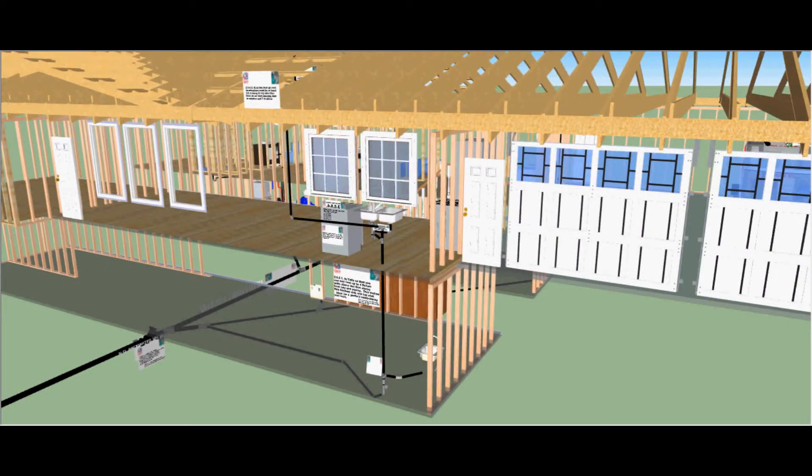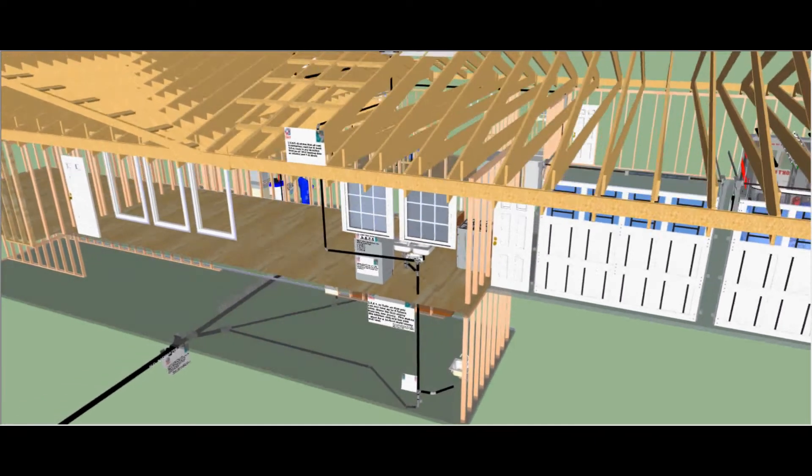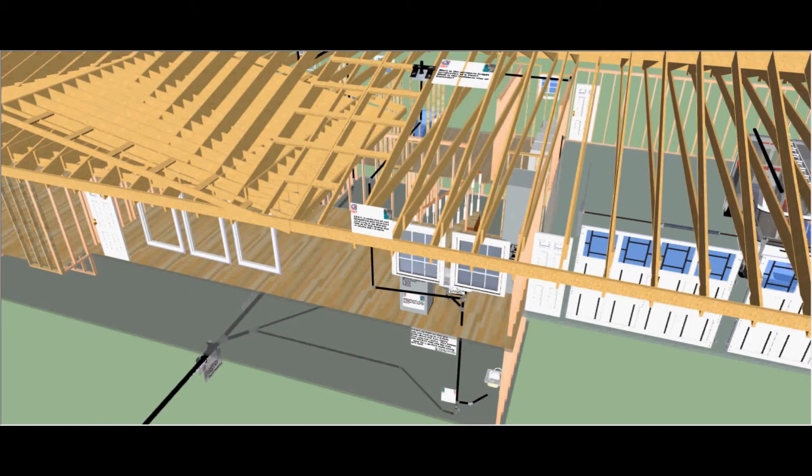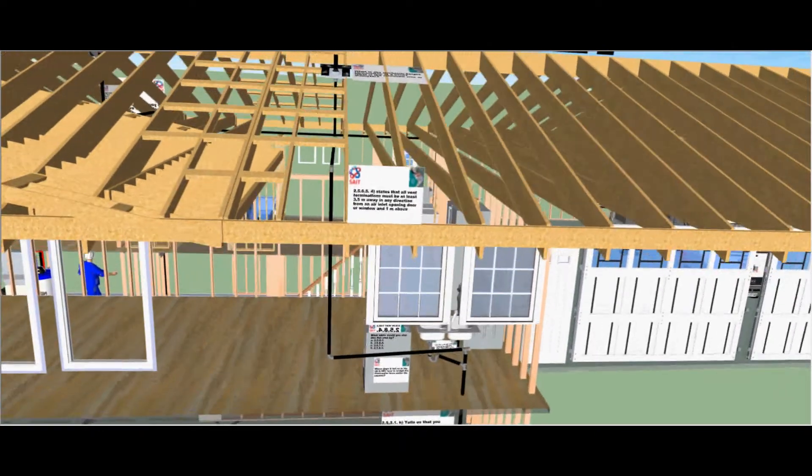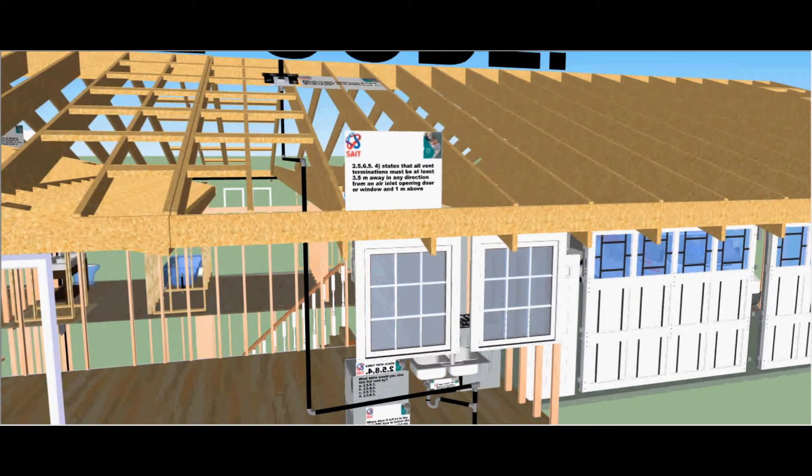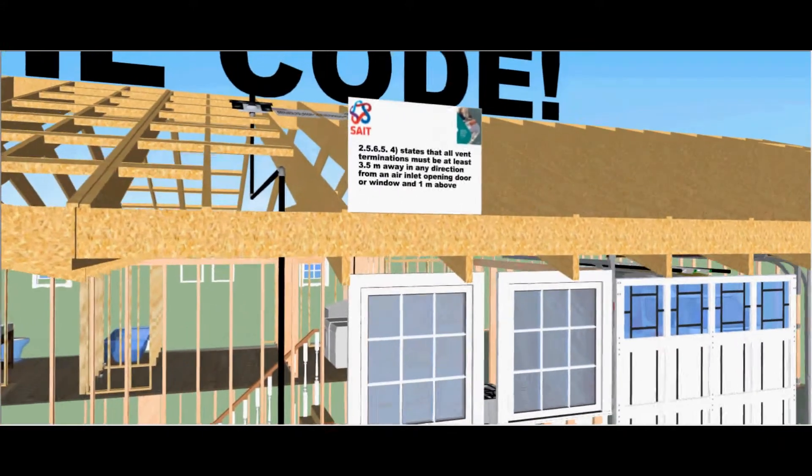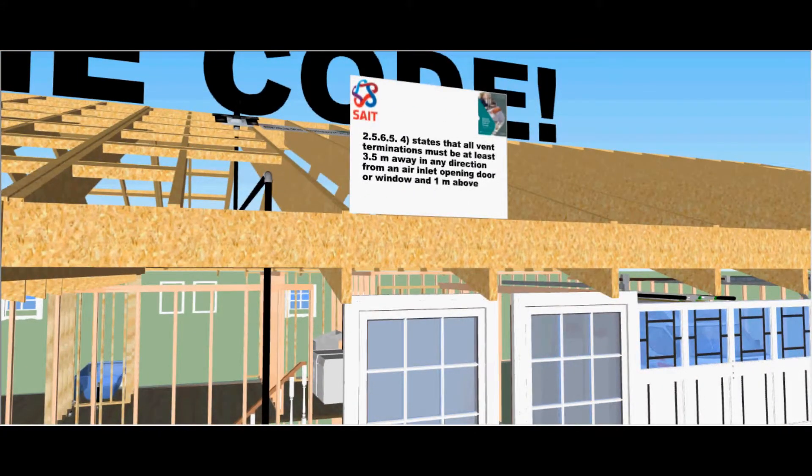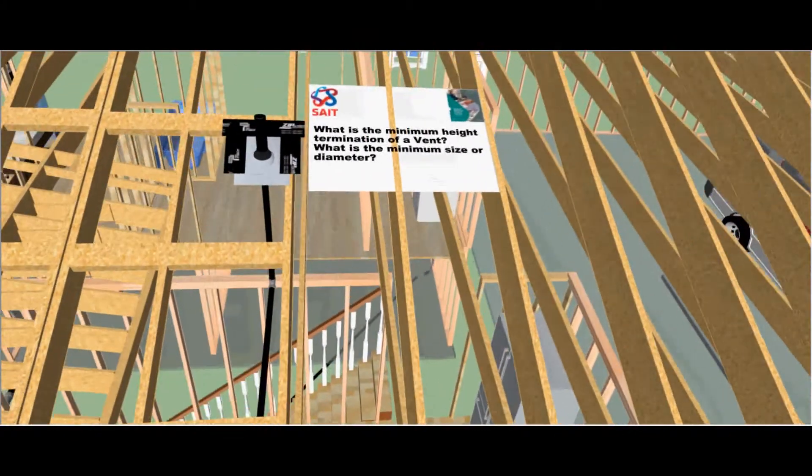Now let's take a look at the venting system. Here we see we have two windows above the kitchen so we had to run a flat vent. In the code it states that all vent terminations must be at least three and a half meters away in any direction from any air inlet opening, door, or opening window, and one meter above.